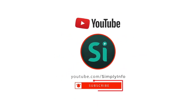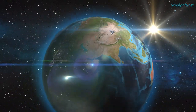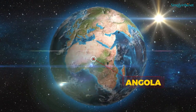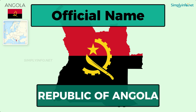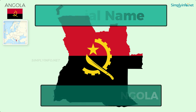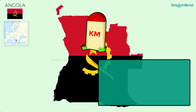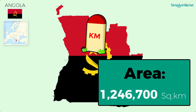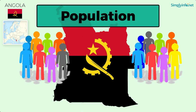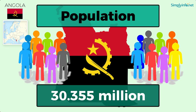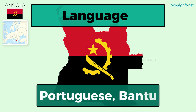Please subscribe for more videos and click the bell icon for updates. Name: Angola. Official name: Republic of Angola. Capital: Luanda. Area: 1,246,700 square kilometers. Population as of 2018: 30.355 million. Languages: Portuguese and Bantu.